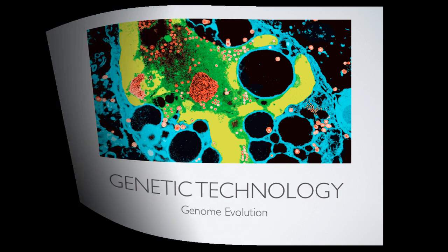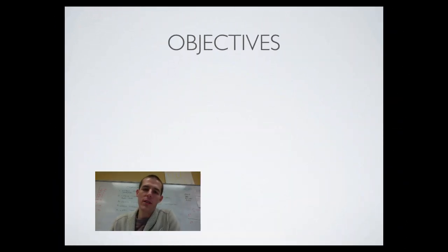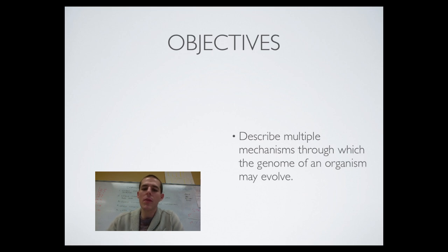So here's your objective for the day. There is just one of them, so forgive the typo that says objectives. By the end of the video, be able to describe multiple mechanisms through which the genome of an organism may evolve. Essentially what we're going to be talking about today is ways that genetic material picks up extra material that can be used as the raw material for evolution.